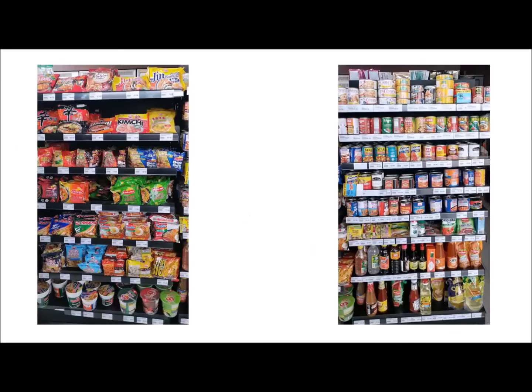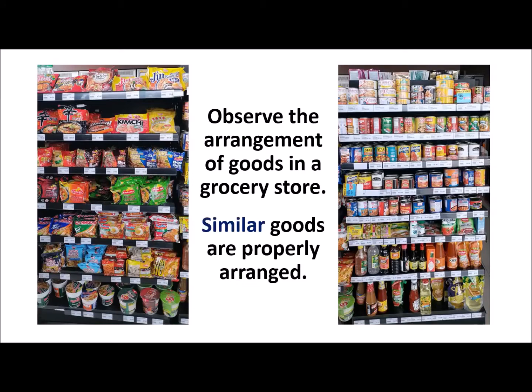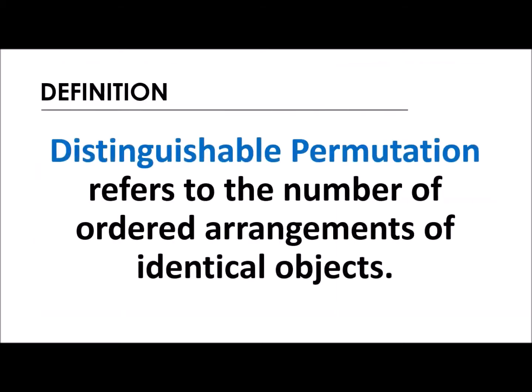For the next kind of permutation, observe the arrangement of goods in a grocery store or in a community pantry. Lahat ng noodles magkakasama, lahat ng canned goods magkakasama, as well as the liquids or yung mga seasonings magkakasama din. Similar goods are properly arranged. Yung kanina, yung linear at saka circular, we are arranging different types of objects. Ngayon, similar goods — that is what we call distinguishable permutation, which refers to the number of ordered arrangements of identical objects.